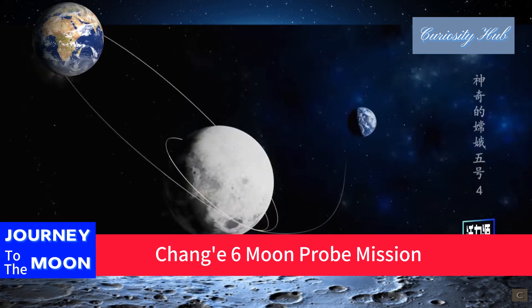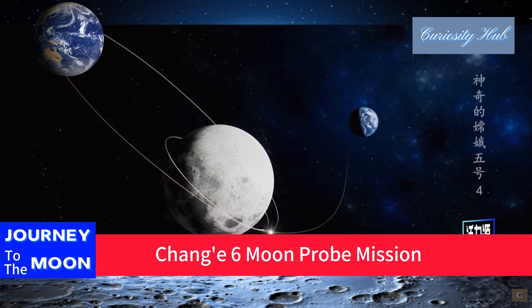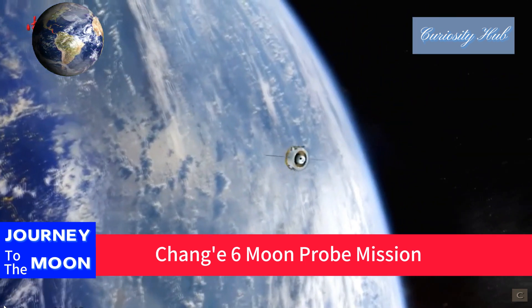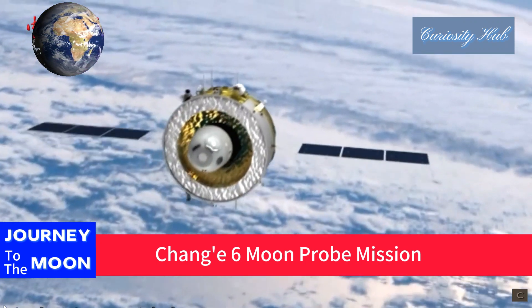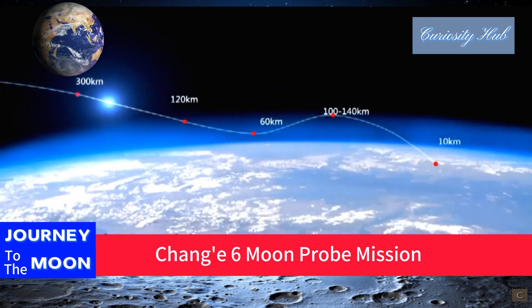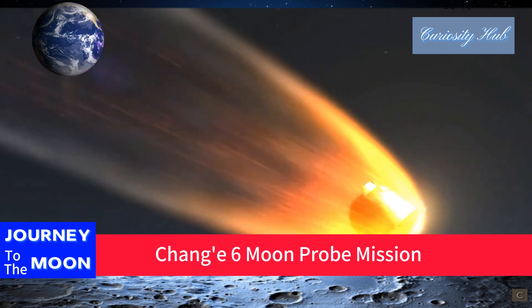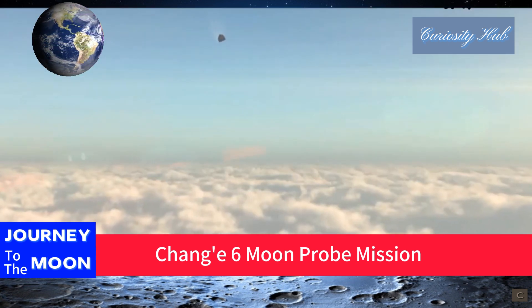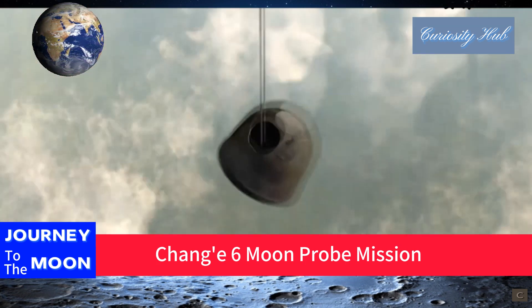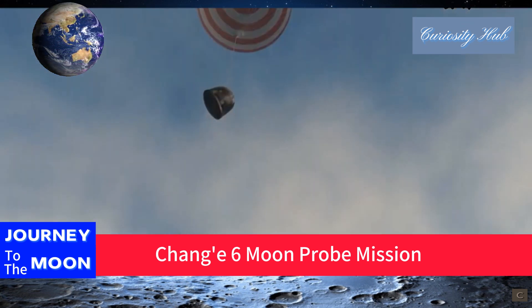In the tenth stage, the lunar-Earth transfer phase, after undergoing one to three mid-course corrections, the orbiter-returner combination reaches an altitude of approximately 5,000 kilometers from Earth, where the returner separates from the orbiter. In the final re-entry and recovery stage, the returner performs a semi-ballistic skip maneuver, decelerating from cosmic second speed to cosmic first speed, re-entering the Earth's atmosphere, and landing in the designated landing area in Siziwang County, Inner Mongolia Autonomous Region, China. This concludes the entire 53-day lunar far side mission.